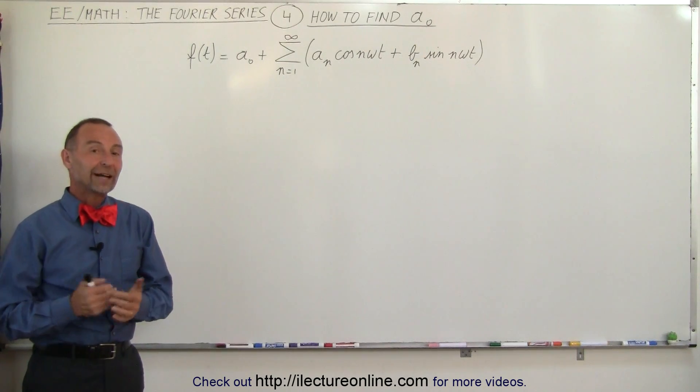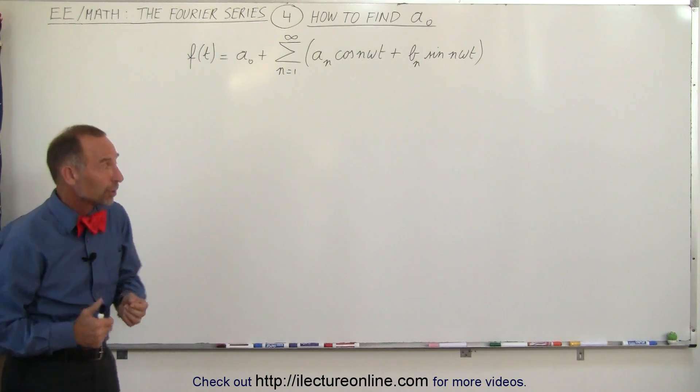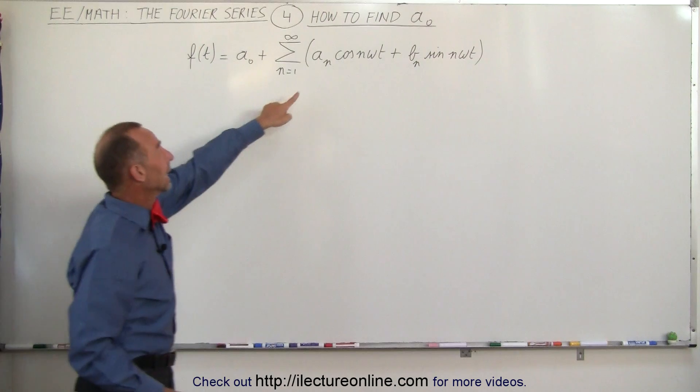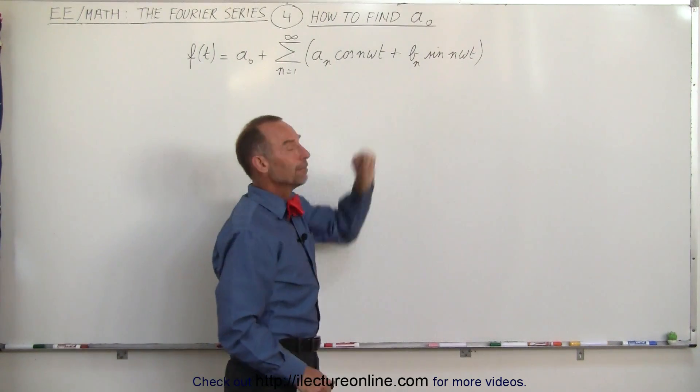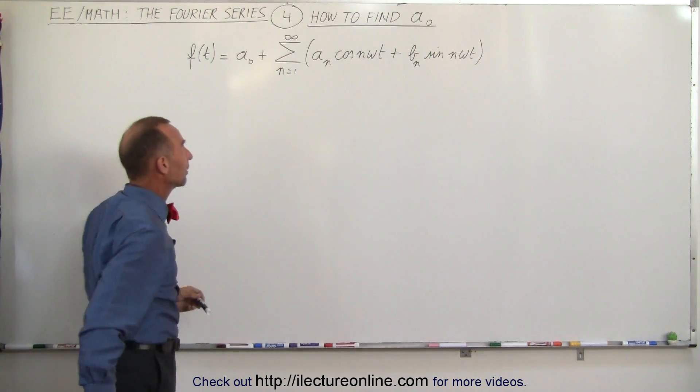Welcome to ElectronLine. Finding the Fourier series of a periodic function, a non-trigonometric periodic function, is essentially finding the constants a sub-naught, a sub-n, and b sub-n. In this video, we're going to show you how to find the constant a sub-naught.